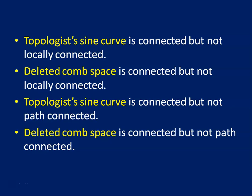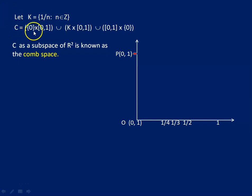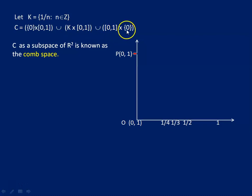Let us define the deleted comb space. Let K equal {1/n : n is a positive integer}, so K contains 1, 1/2, 1/3, 1/4, 1/5, and so on. Define C as the union of {0} × [0,1], K × [0,1], [0,1] × {0}, and {0,1}. This C is a subspace of R² known as the comb space.